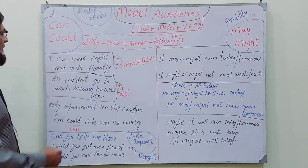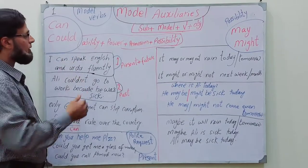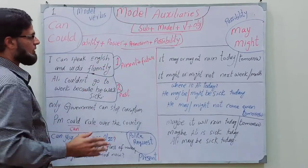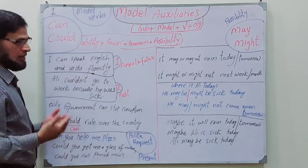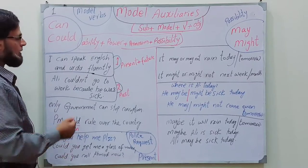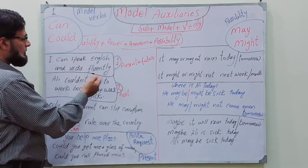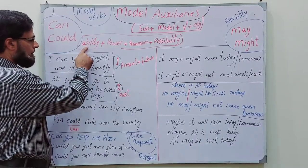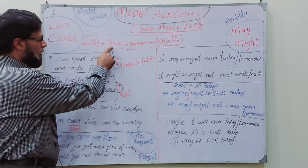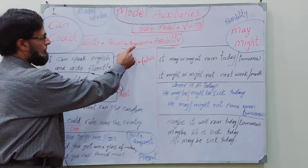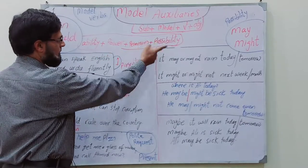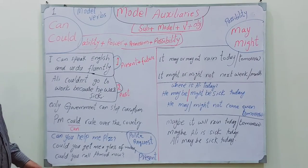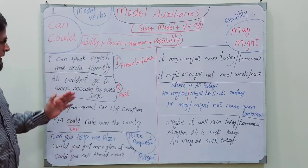First of all, modal verbs or auxiliary verbs are used in real life situations to express: ability, power, permission, and possibility. Let us see some examples.